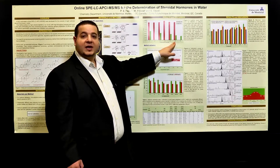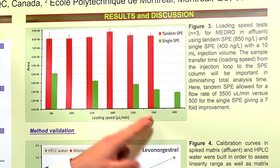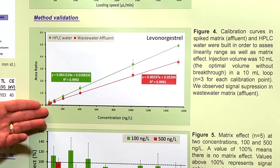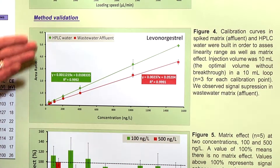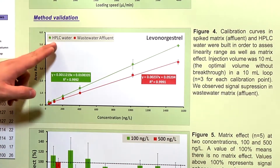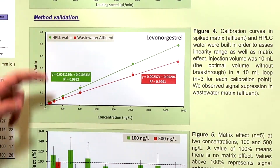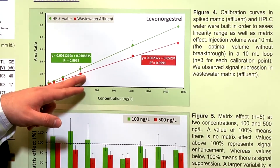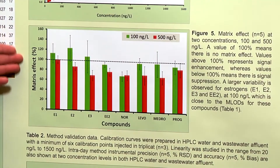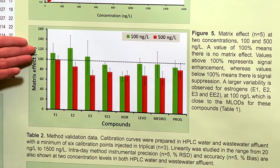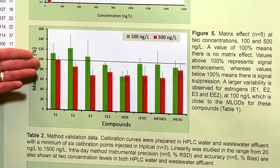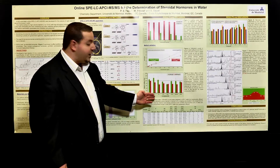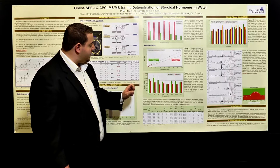That means we can load at 3,500 microliters per minute with no breakthrough issues. We also performed normal validation parameters, including assessing matrix effects using calibration curves by dividing the slopes for hormones tested in HPLC water versus wastewater effluent. The red curve is in wastewater and the green in HPLC water. Values over 100 indicate signal enhancement; under 100 indicates matrix suppression. Generally we have some suppression, with a few estrogen compounds showing some enhancement, though the error bars are also high.